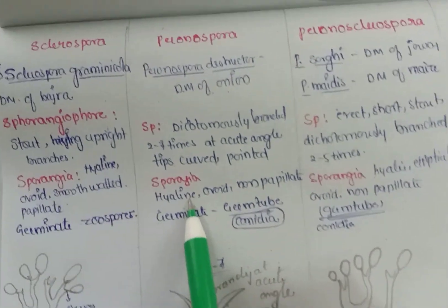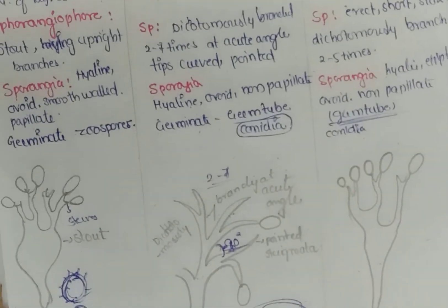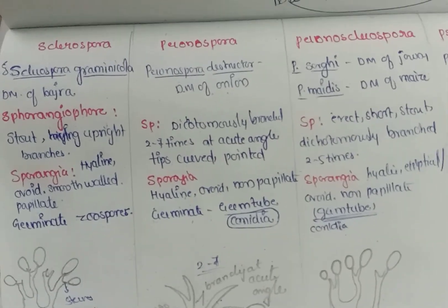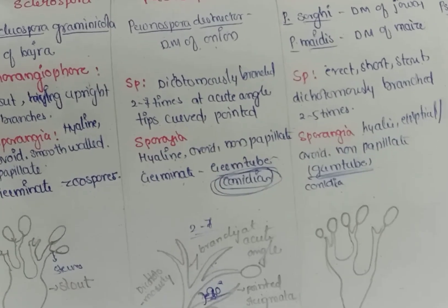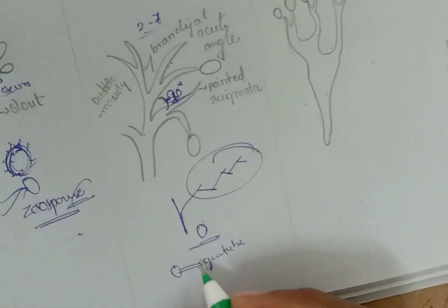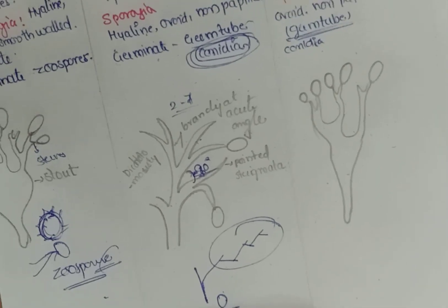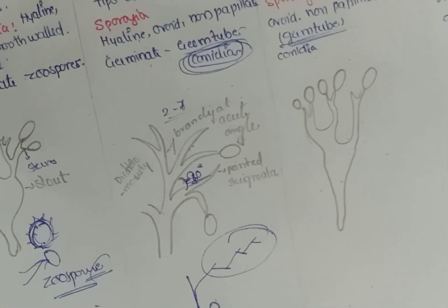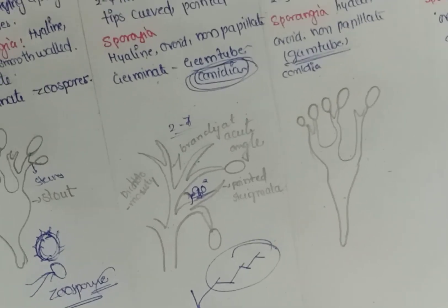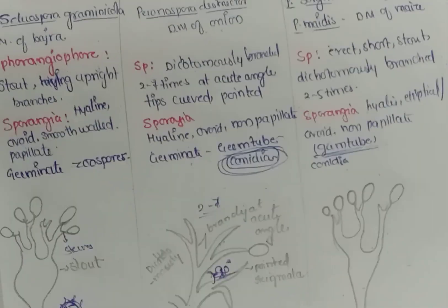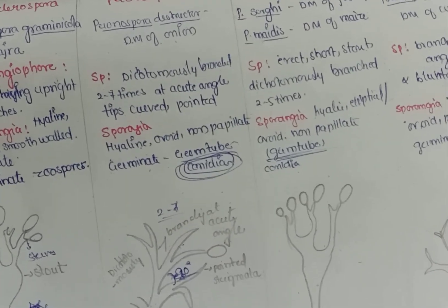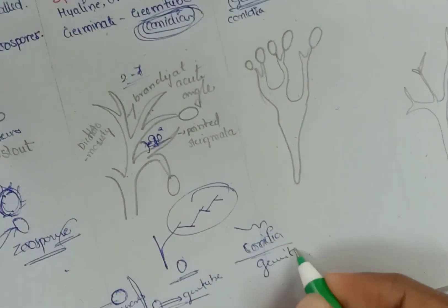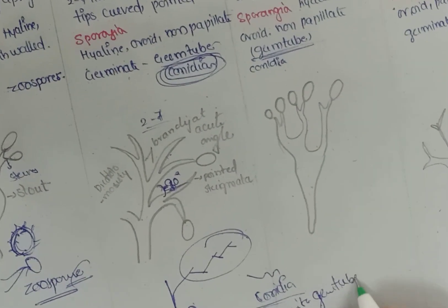The sporangia of Peronospora are hyaline and ovoid, similar to Sclerospora, but they are non-papillate — without spines. They germinate through a germ tube, similar to conidia, rather than through zoospores. This is an important difference: Peronospora and Peronosclerospora both germinate through germ tubes and thus act like higher fungi, whereas typical lower fungi germinate through zoospores.